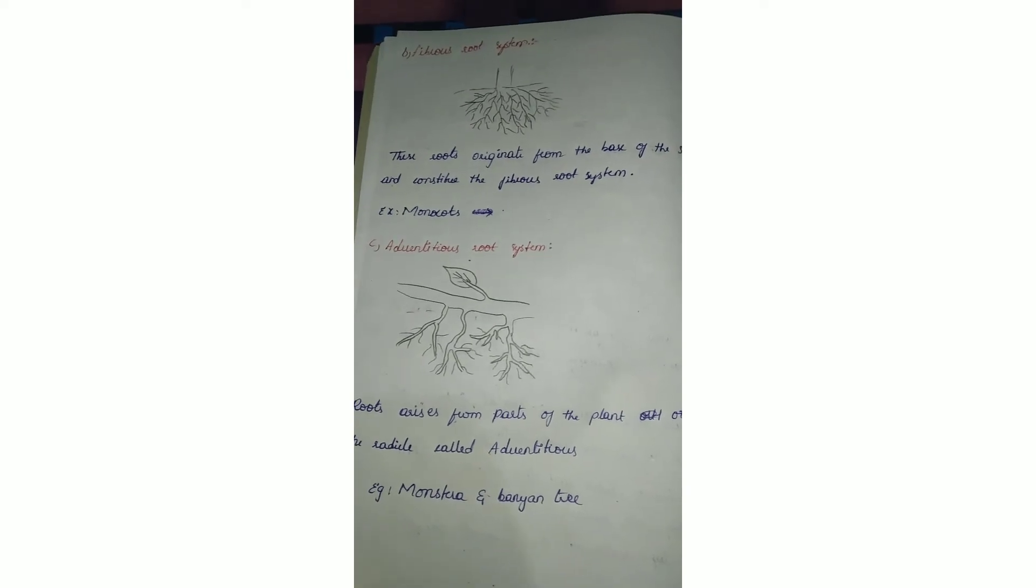Next is modification. Roots are modified into many types. Roots are the part of the plant mainly used to support and anchor the plant. Under modifications, how many types have they modified?